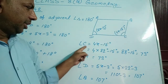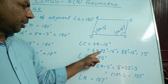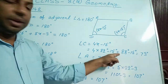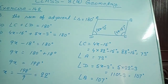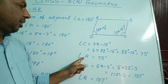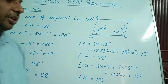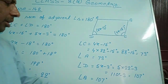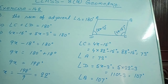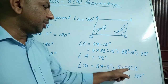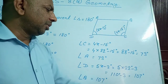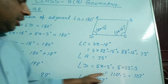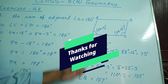Angle C equals 4x − 15 = 4 × 22 − 15 = 88 − 15 = 73°. Since opposite angles are equal, angle A also equals 73°. Angle D equals 5x − 3 = 5 × 22 − 3 = 110 − 3 = 107°. Since angle B and angle D are opposite angles of the parallelogram, angle B also equals 107°. These are the four angles of the parallelogram.